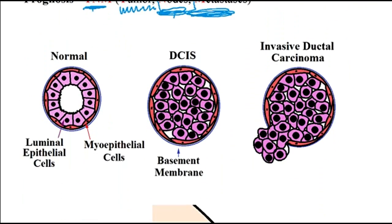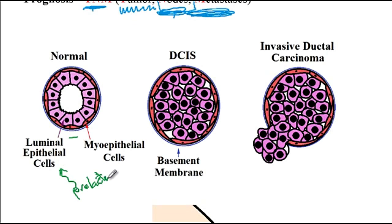Before describing malignant tumors, here is background histology of a breast duct. There is a basement membrane on the outside, then the myoepithelial layer shown in red, and at the center are luminal epithelial cells whose function is to produce milk. Prolactin acts on luminal epithelial cells to produce milk, while oxytocin acts on myoepithelial cells to contract and expel milk from the nipple.